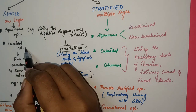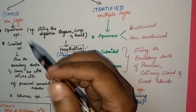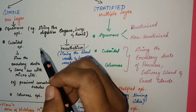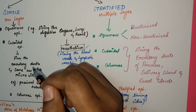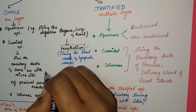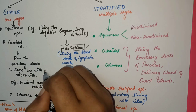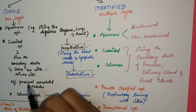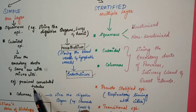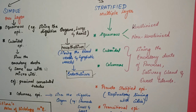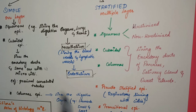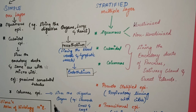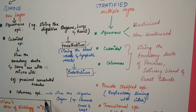Next we move on to cuboidal epithelium. You can see cuboidal epithelium cells lining the excretory ducts. Some are with microvilli — small microvilli-like projections. An example is the proximal convoluted tubule of the kidney in the excretory system.